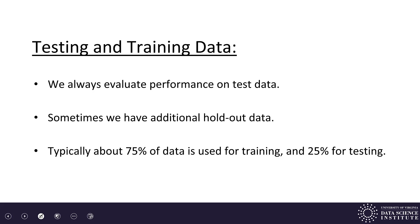We always evaluate performance on the test data. Sometimes we have an additional holdout data set: we optimize and set parameters on our training and testing data, and then have a separate holdout set for final testing. Typically when splitting data into training and testing, we use roughly 75% for training and 25% for testing — though 2/3 to 1/3 or 80/20 splits are also used depending on the dataset and how much data is available.